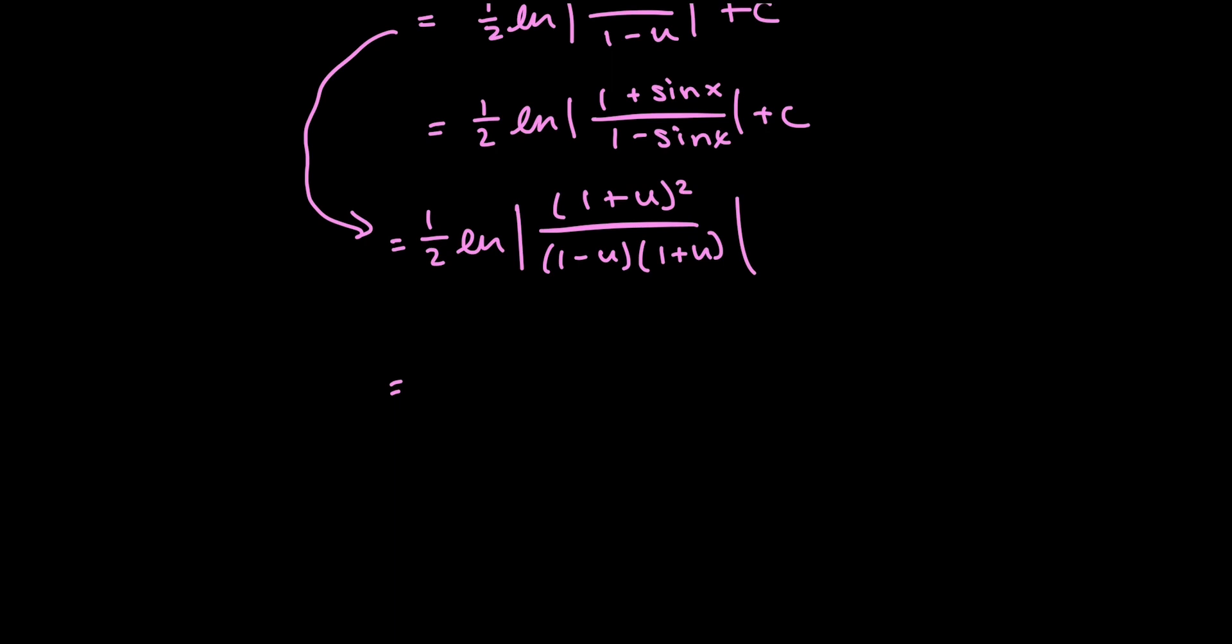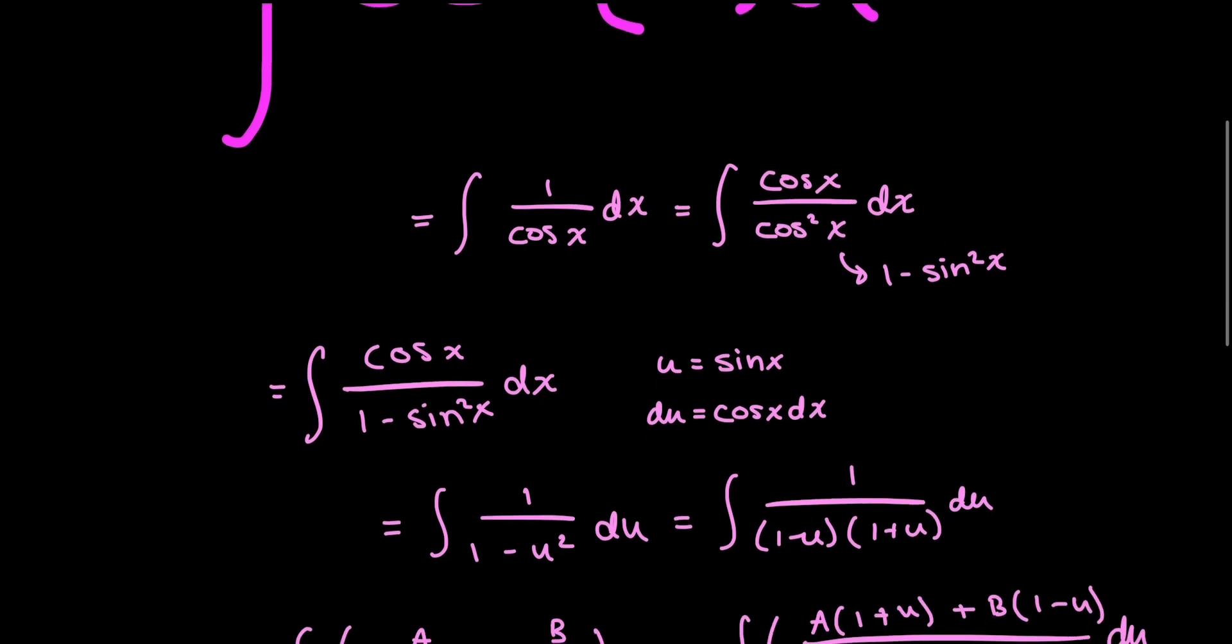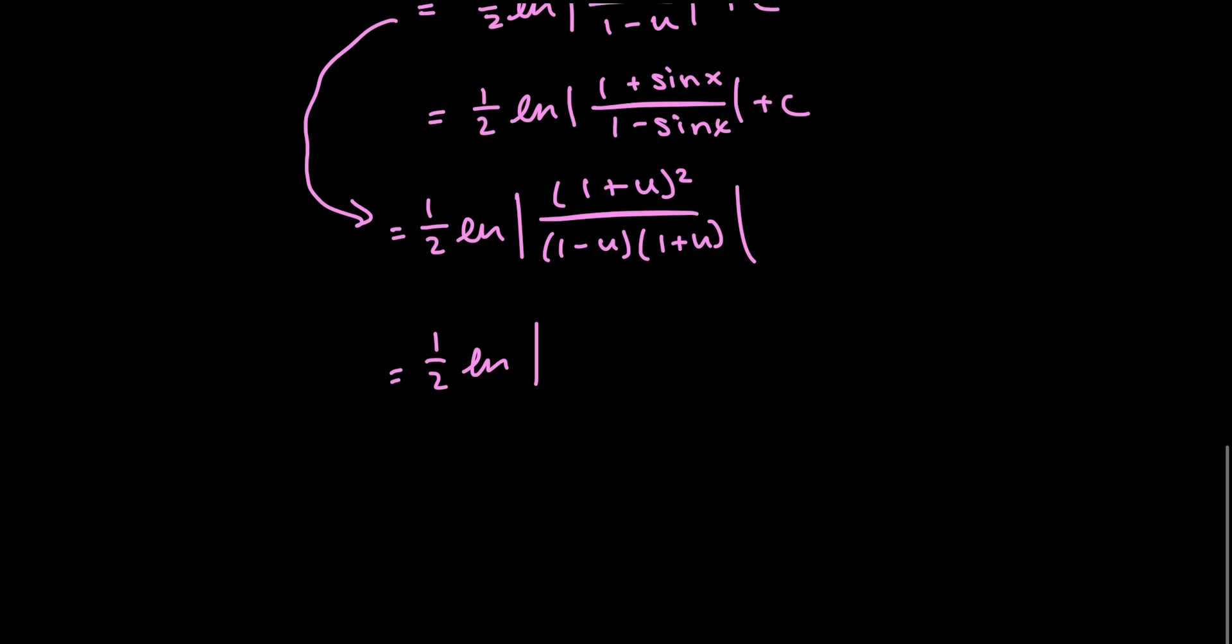So this becomes, I can replace my sine term into here, and using my information and definitions from way earlier, I get a 1 plus sine x squared over a 1 minus sine squared x. And then this can be rewritten as 1 half log 1 plus sine x over cosine x all squared.